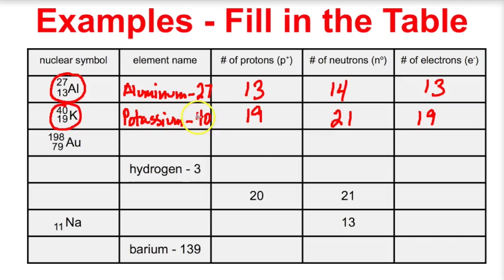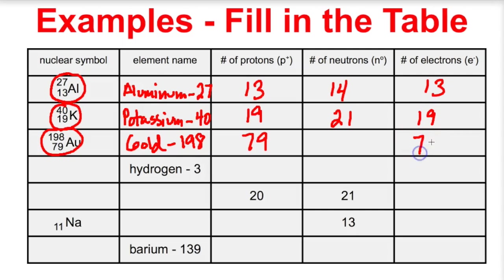Potassium-40 has a mass of 40; the number of protons plus the number of neutrons is 40. Let's look at this one — the name is gold-198 (AU). How many protons? It has 79 protons and 79 electrons. To figure out the number of neutrons, take 198 minus 79, which gives 119 neutrons inside its nucleus — a pretty big nucleus with 79 protons and 119 neutrons.